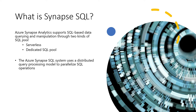SQL can be supported in two ways: one, a serverless pool, and second, a dedicated SQL pool. Synapse SQL uses a distributed query processing model for greater performance. The query is distributed to different nodes and executed in parallel across all SQL operations. Simply put, it is a distributed query processing model which can parallelize SQL operations — that is Azure Synapse SQL.